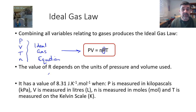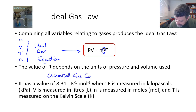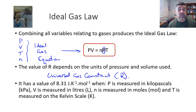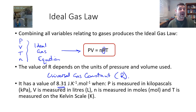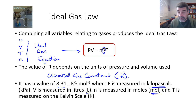The universal gas constant R has differing units depending on which units are used for the other variables in this equation. Its most common value is 8.31 joules per Kelvin per mole. This assumes that pressure is measured in kilopascals, volume is measured in litres, number of moles is measured in moles, and temperature is measured on the Kelvin scale.